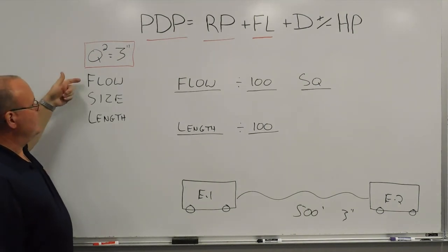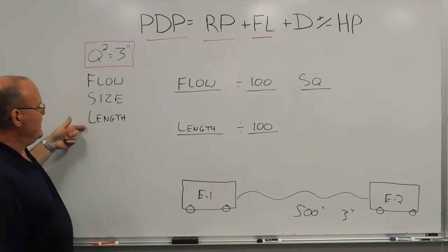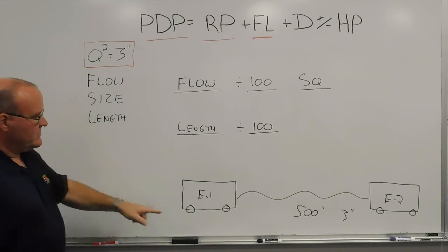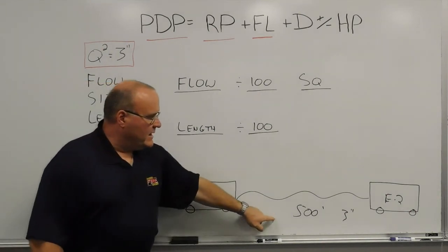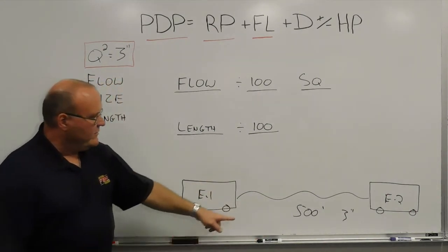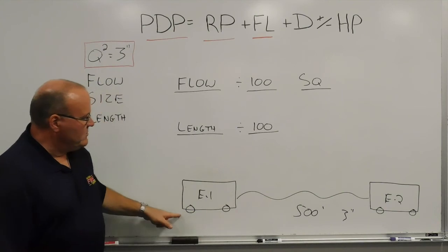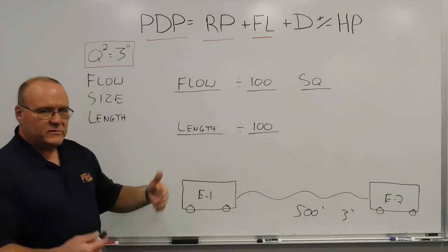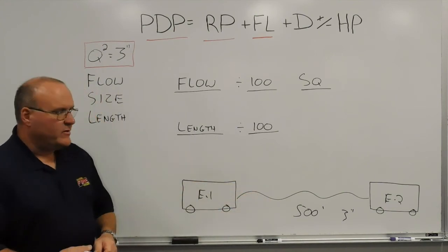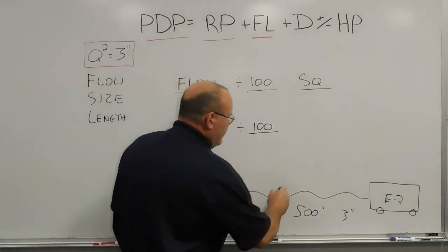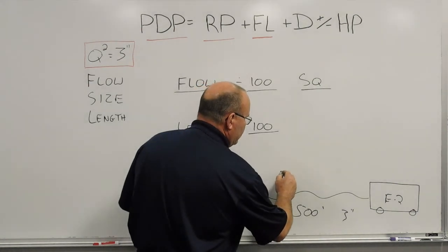So we're going to account for the flow, the size, and the length. The size we're dealing with is 3-inch hose. In this particular example, we have 500 feet of 3-inch hose from engine 1 to engine 2, and we'll use a gallon-per-minute flow of 400 gallons a minute.